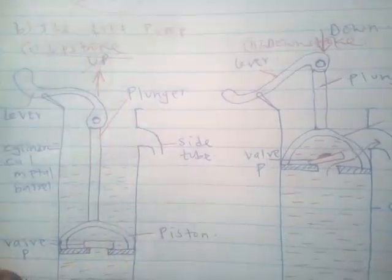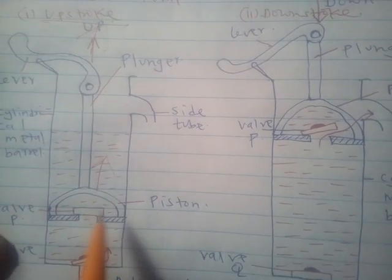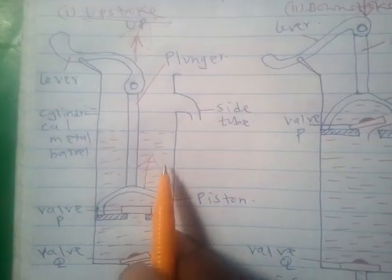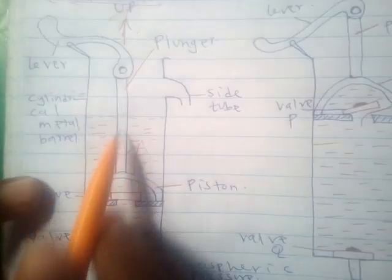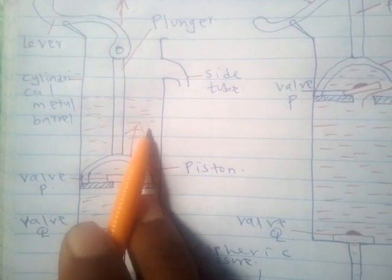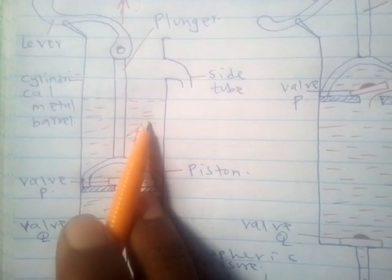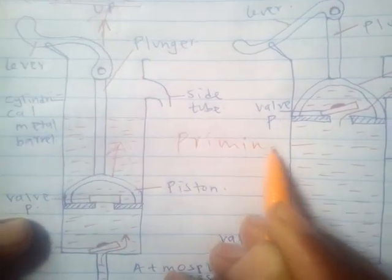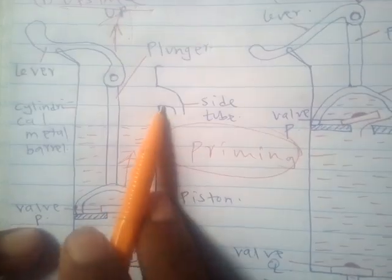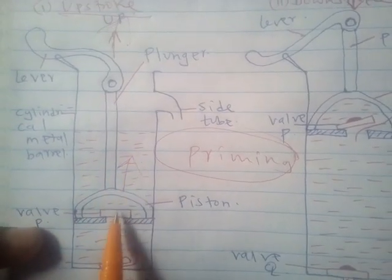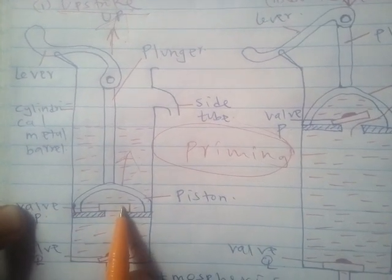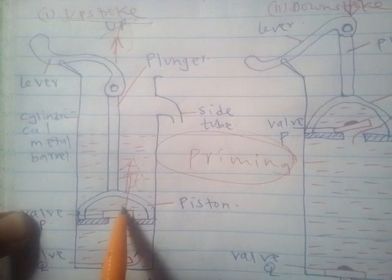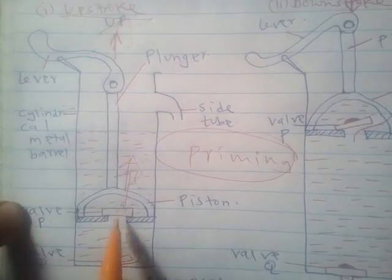During the upstroke, the plunger is moved upwards, and the piston also moves upwards. Before the lift pump is used, we fill water above the piston — this process is called priming. Priming initiates the working of the lift pump. When the plunger is moved up, the weight of valve P and the weight of the priming water above valve P causes valve P to close.